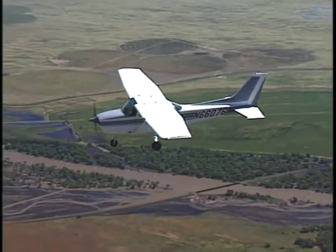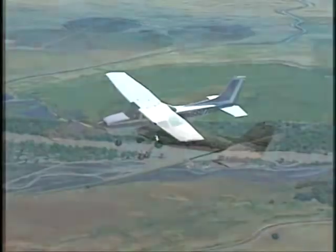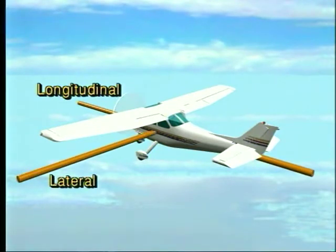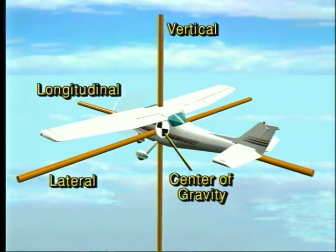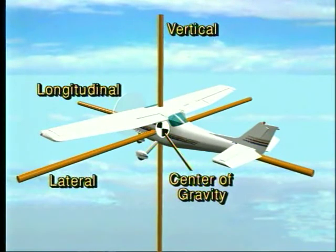To understand how this is accomplished, we must look at stability in relation to the center of gravity and three axes of flight. Since an aircraft operates in a three-dimensional environment, aircraft movement takes place around one or more of the three axes of rotation. The common reference point for all three axes is the airplane's center of gravity, or CG, which is the theoretical point where the entire weight of the airplane is considered to be concentrated. Since all three axes pass through this point, the airplane always moves about its CG, regardless of which axis is involved.